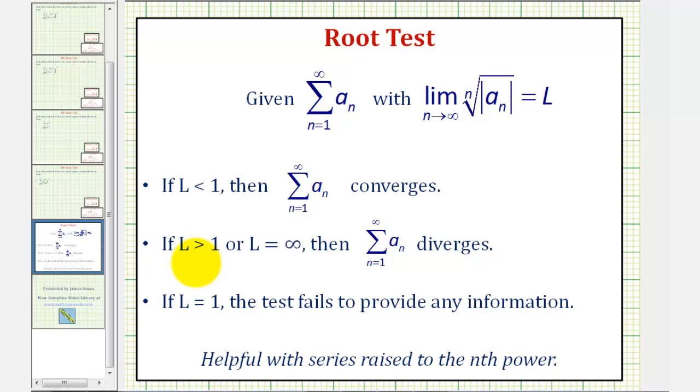If L is greater than one or approaches infinity, then the series diverges. And if L equals one, the test fails to provide any information. The root test is helpful when the series is raised to the nth power.